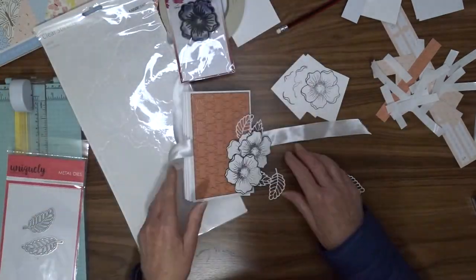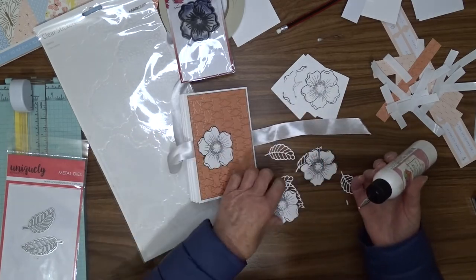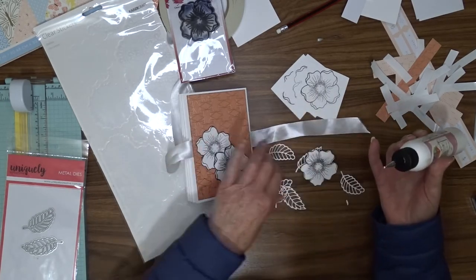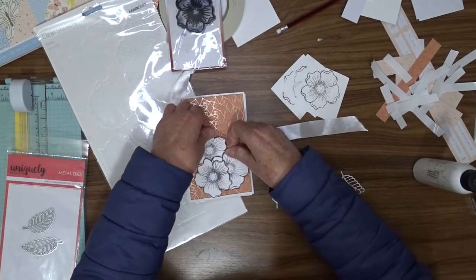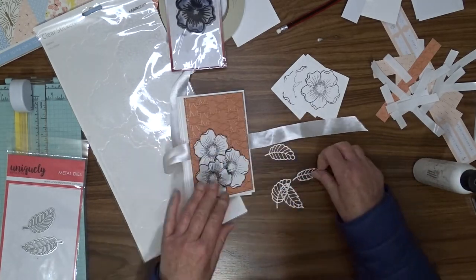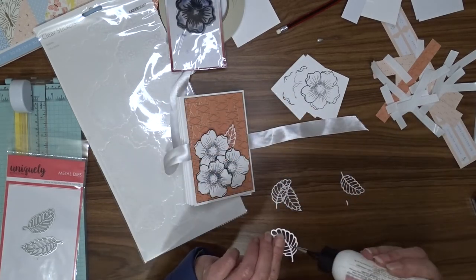To decorate my card, I'm going to use this Woodware Mini Scented Bloom Stamp. I've stamped it onto some white cardstock and used black ink to do that, Stazon Jet black ink. I've also used Uniquely Creative's Little Leaves die to cut some leaves out of white cardstock.